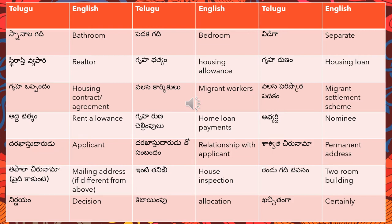Next is 'darkhastu' meaning relationship with the applicant. Usually they will ask what is the relationship with the applicant of the mentioned nominee. 'Darkhastu darudu to sambandhum' refers to that relationship.